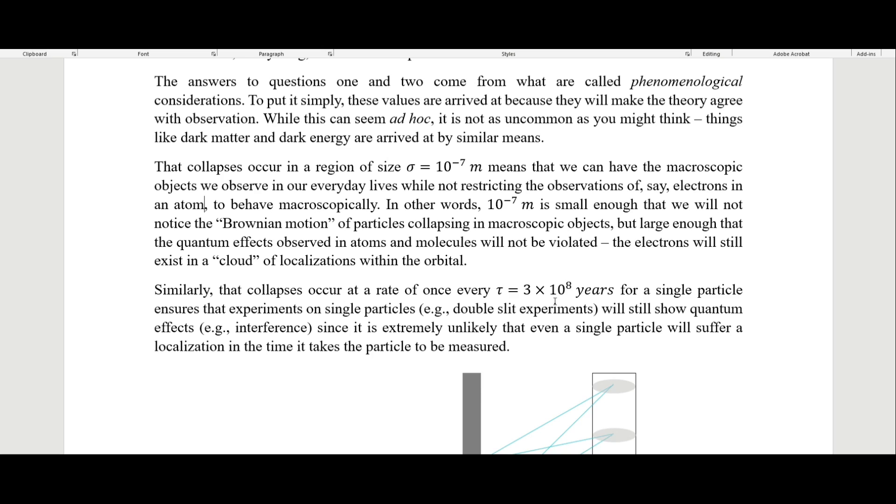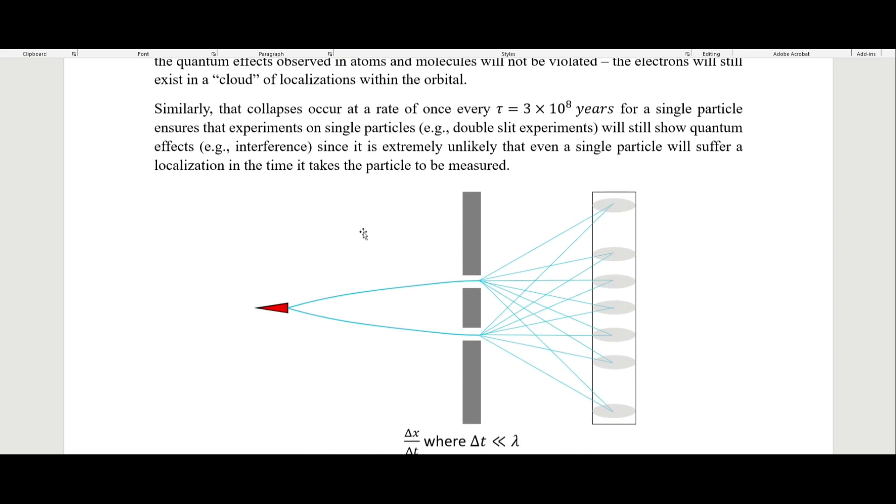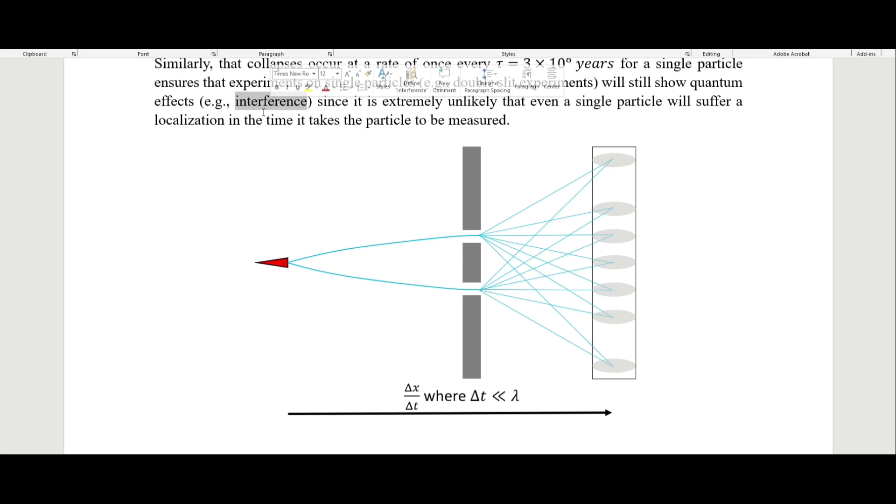Similarly, that collapses occur at a rate of every 300 million years for a single particle ensures that experiments on single particles, such as double slit experiments, will still show quantum effects, such as interference, since it is extremely unlikely that even a single particle will suffer a localization in the time it takes the particle to be measured. The time it takes for that to happen is going to be so much shorter than 300 million years that we will not notice that very many of the particles are collapsing before they hit the sensor.